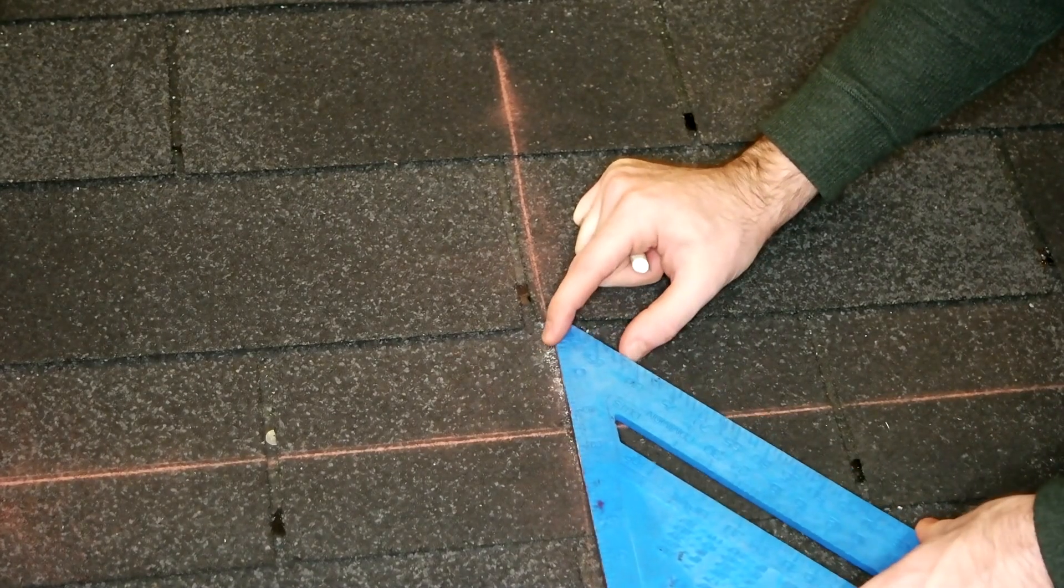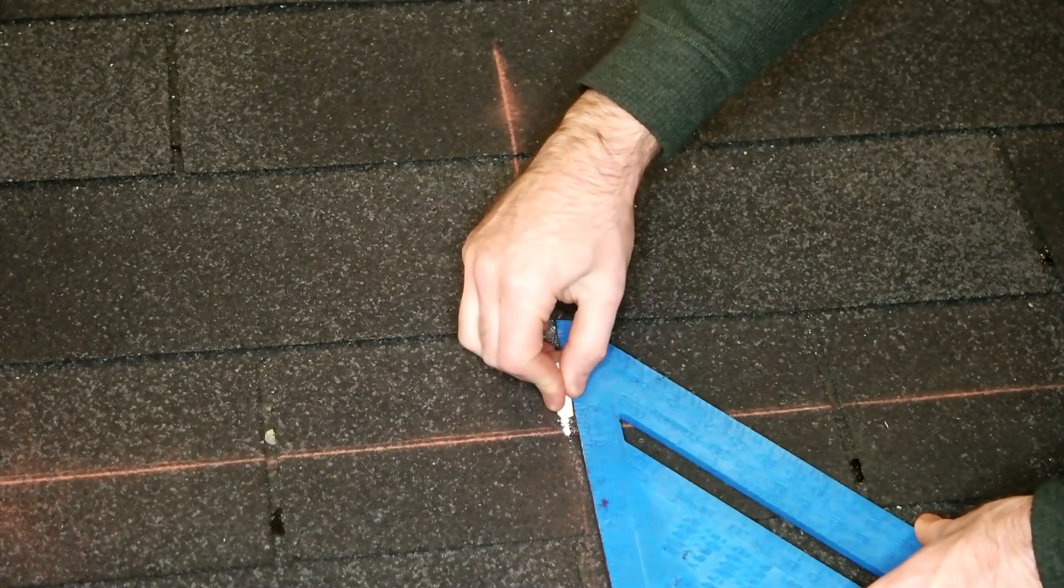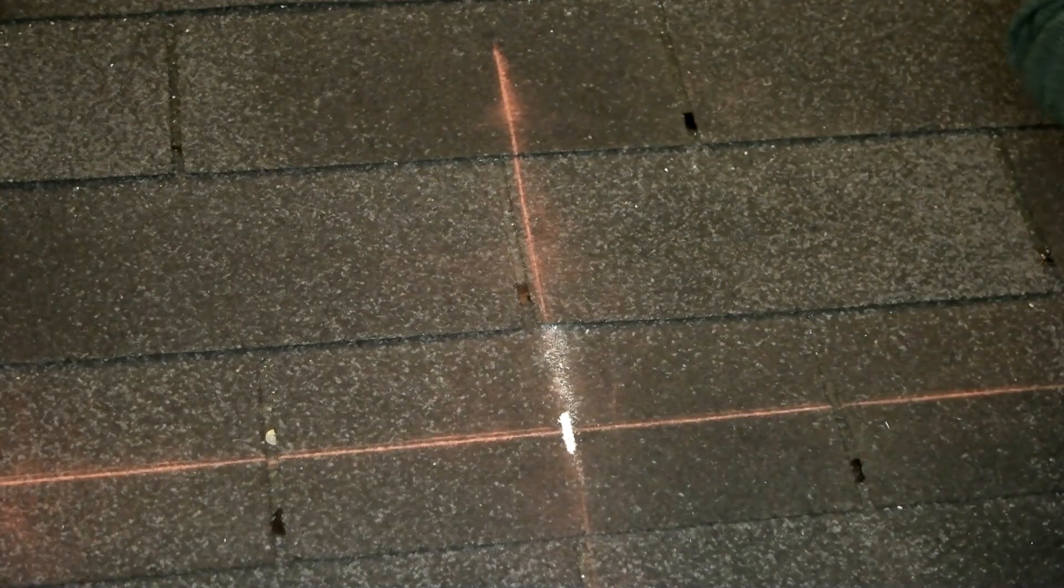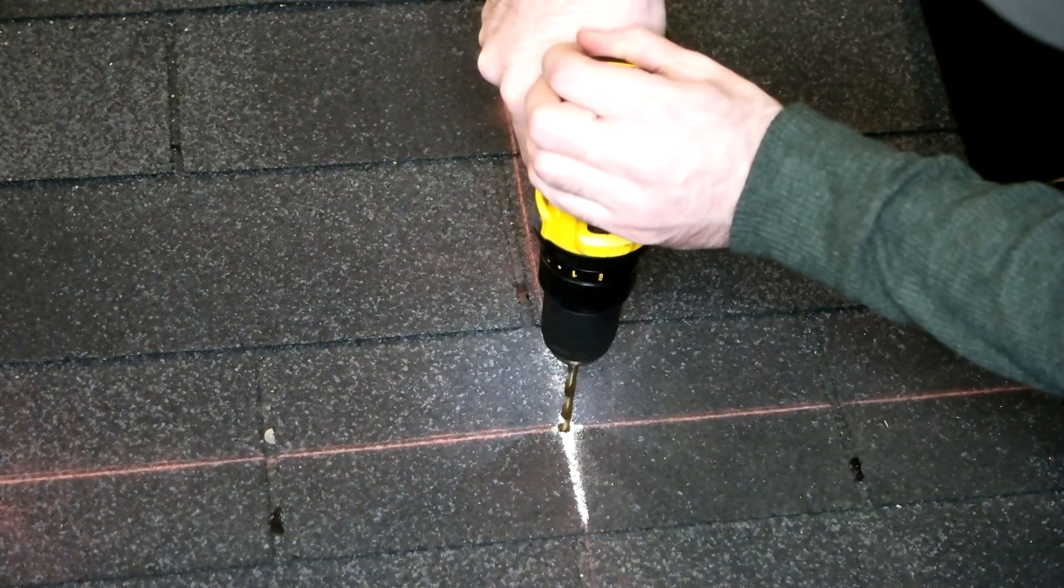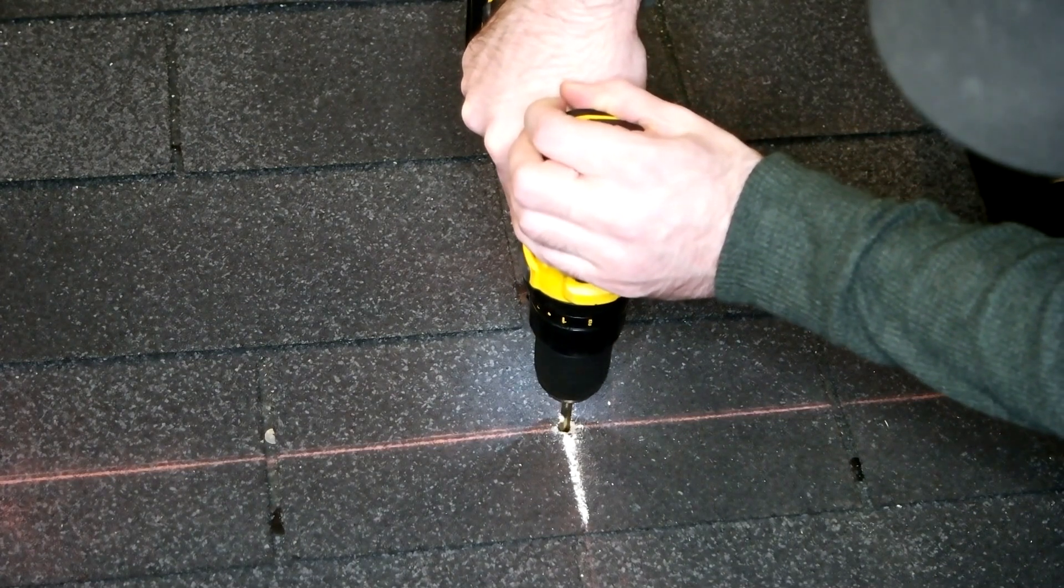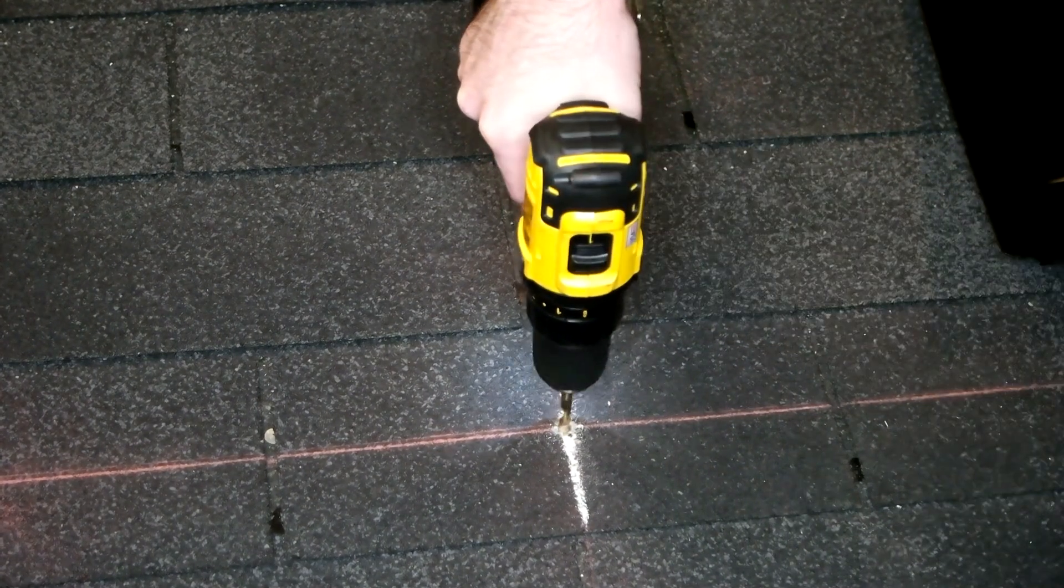For this particular attachment system, we need to have a lag bolt that's going to hit the truss underneath the shingles and attach to the structure. This can often be the most time-consuming and painful part of the whole job. What we're going to want to do is mark off on the roof ahead of time where all of our trusses are going to be. Once we have our roof marked, we can go ahead and start attaching our feet. We can drill a small pilot hole slightly less than the shank of this lag.